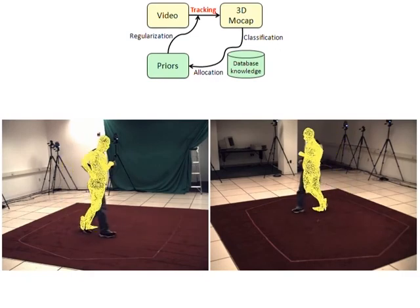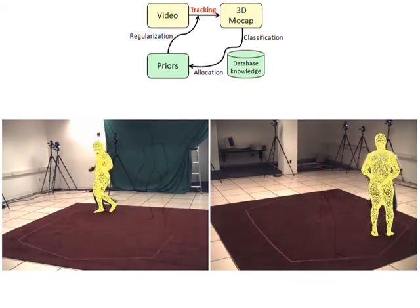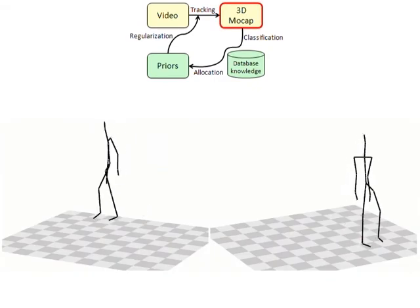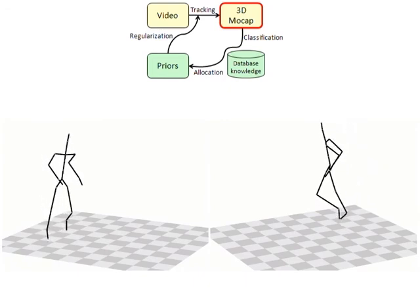However, despite these errors, the overall rough course of the motion may still be recognizable to a reasonable degree. In the next step, 3D motion capture data is derived from the mesh.